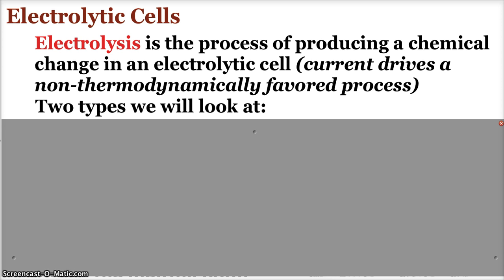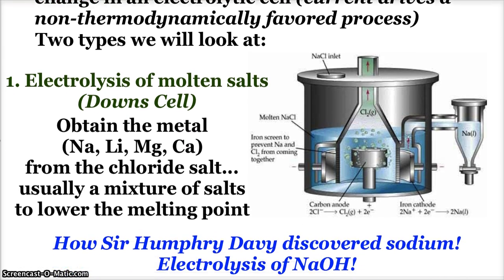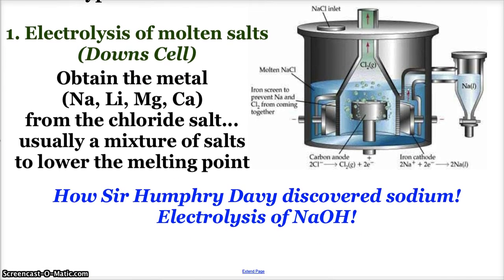The first one is electrolysis of molten salts, and this happens in what's called a Down cell. When we do this, we can obtain metals—usually like sodium, lithium, magnesium, calcium—from chloride salts. So you can take sodium chloride, melt it, make it nice and molten, and then by using this Down cell we can create chlorine gas and liquid sodium from that sodium chloride.